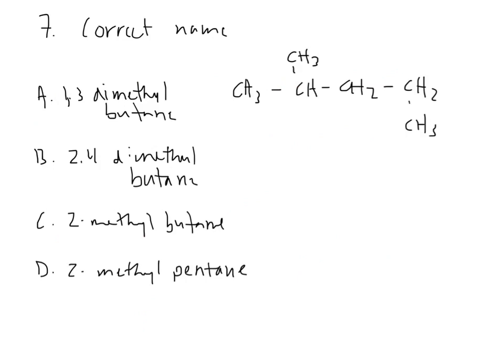Number seven wants to know the correct name for this structure. So if I find my longest carbon backbone, it's either here or here, either one, it's five. So this is a pentane of some group, which since they've got a lot of butanes there, I can be pretty sure it's 2-methylpentane. And if I just double check that, that's indeed what we have. The second carbon has a methyl group attached to the backbone of five.